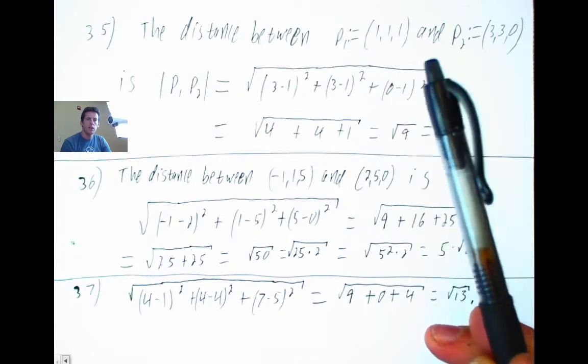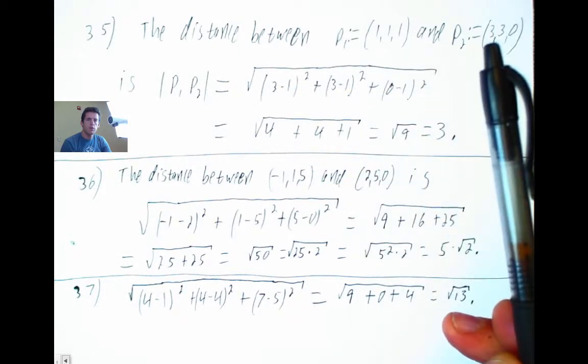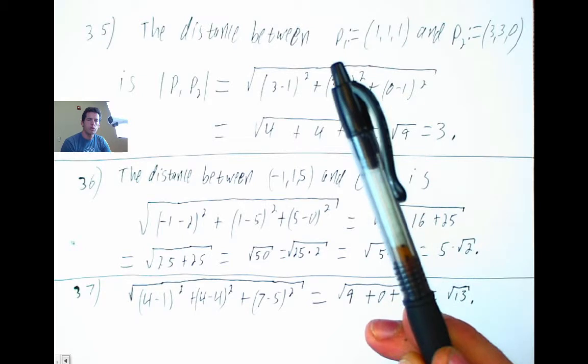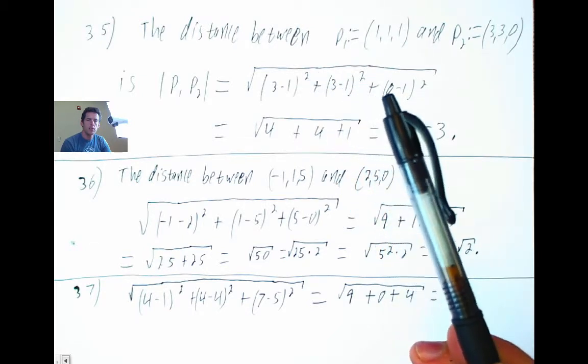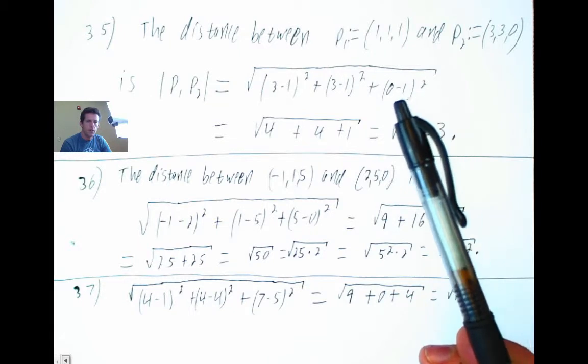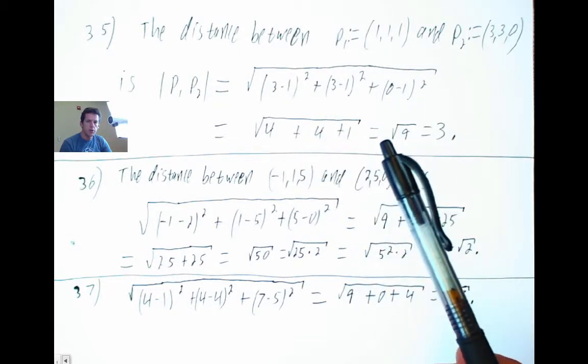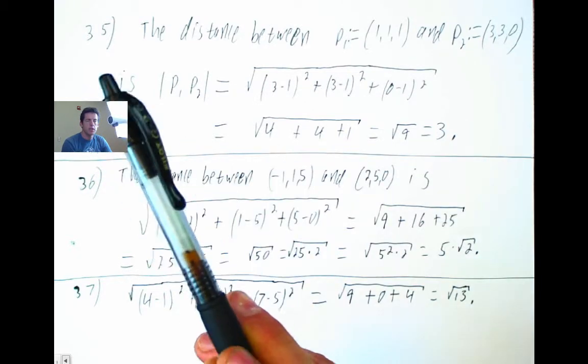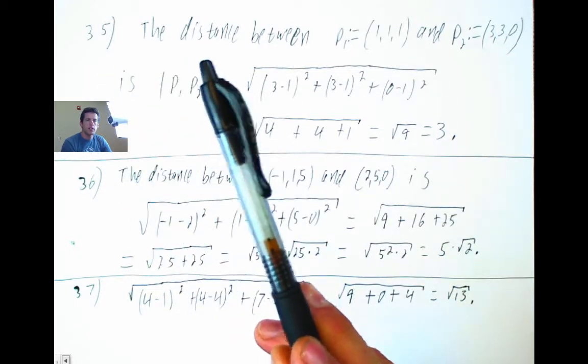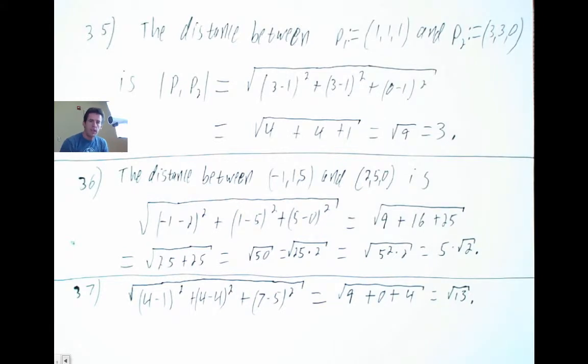So first component of P2 minus the first component of P1 squared. Difference of the second component squared. Difference of the third component squared. Fine. Then I go through with this calculation and you see that I have communicated while calculating. All right, so I told you, I made a factual statement. The distance between this point and this point is something equal to 3.